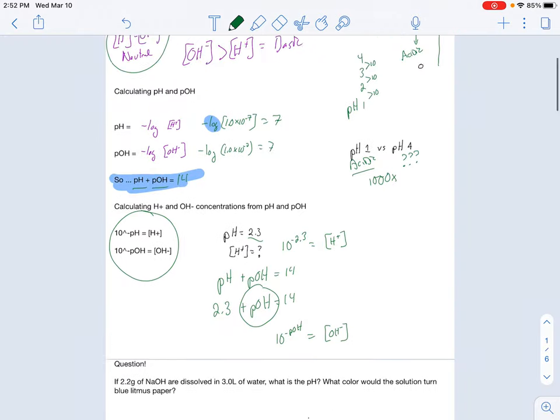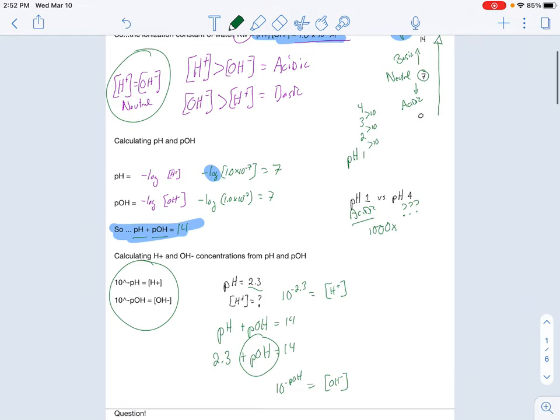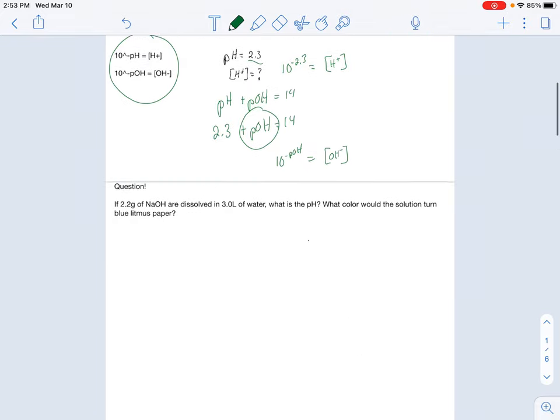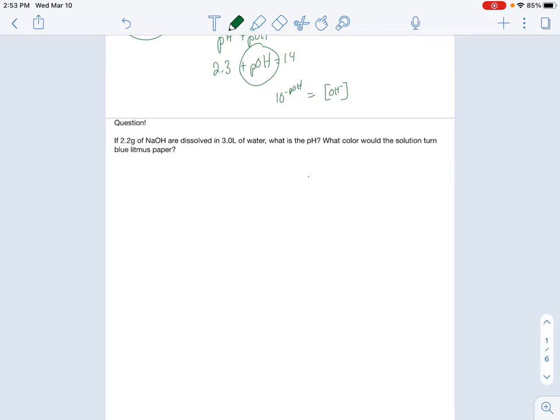All right. You'll have a few practice problems on those, but that is kind of what pH and pOH is all about. Basically, how acidic or basic something is. Yes, pun intended? Maybe. Who knows? Let's look at an actual question. So 2.2 grams of sodium hydroxide is dissolved in 3 liters of water. What is the pH? What color would the solution turn blue litmus paper?